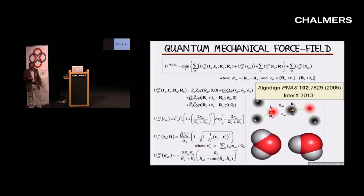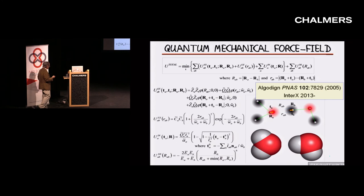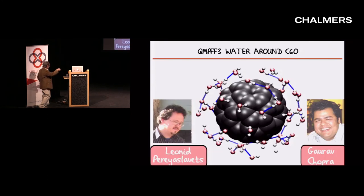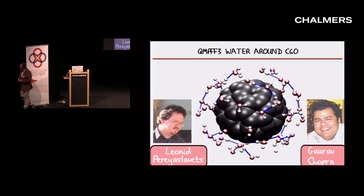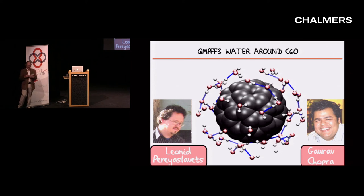We actually used this in a study with Leonid Pereslavets and Gaurav Chopra — Gaurav was a PhD student of mine at the time, and Leonid a postdoc who came from the group in Moscow. We were able to take Buckminster fullerene, put it in a big box of water, treat the whole thing by a quantum mechanical force field, and show that it makes a big difference on the ordering of the water. In classical simulations, the water is ordered to about one layer; in quantum simulations, to two or three layers.